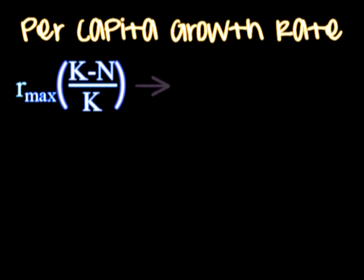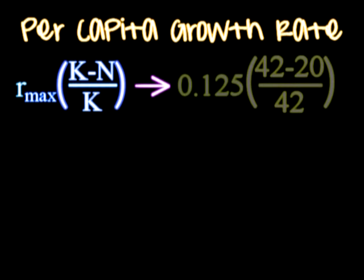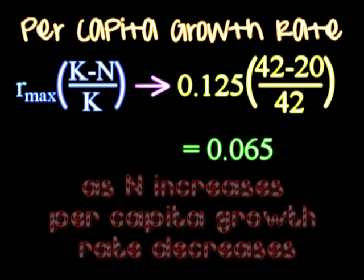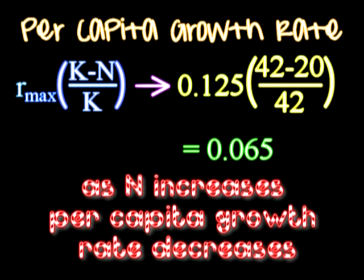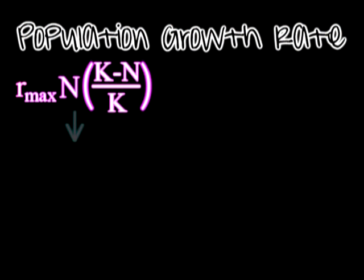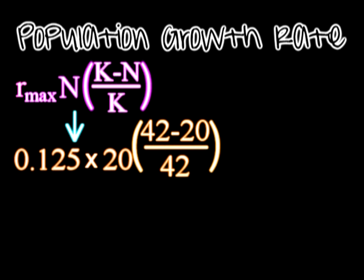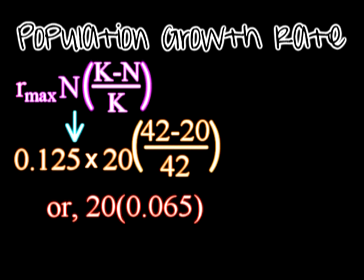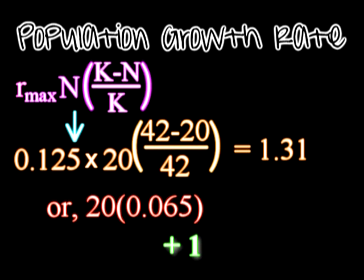To find the per capita growth rate, we use the right side of the equal sign excluding the N on the exterior of the parenthesis. As N increases, the per capita rate decreases because resources are limiting. To find the population growth rate, use the same equation as per capita growth rate and multiply the entire equation by N. So you can take the per capita growth rate of 0.065 and multiply it by 20 to get 1.31, which rounds to plus 1.